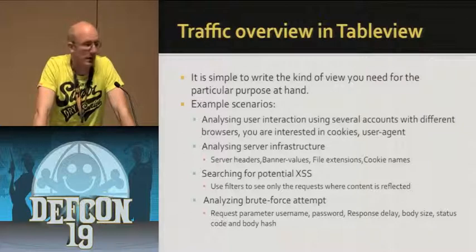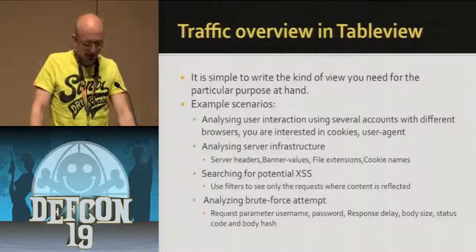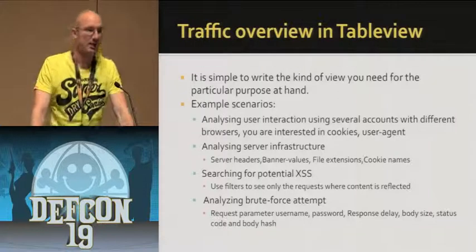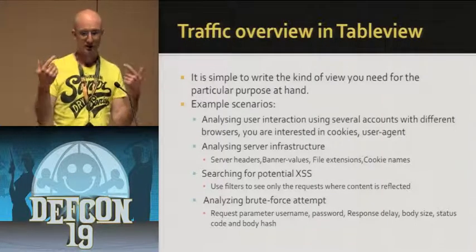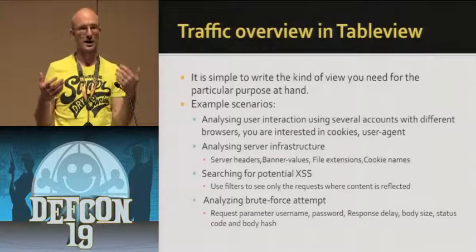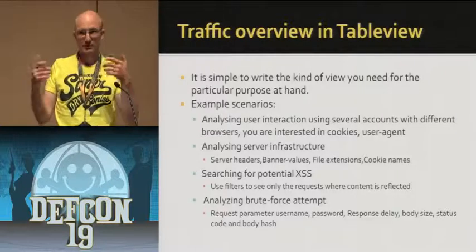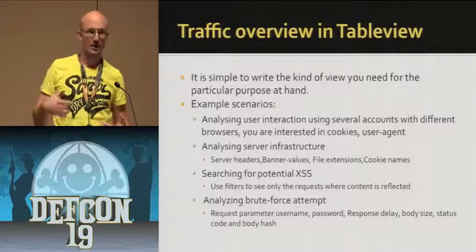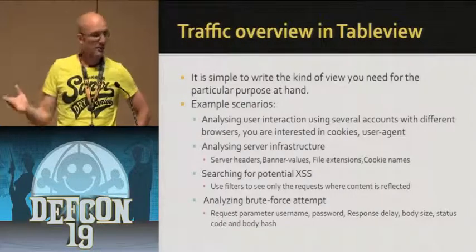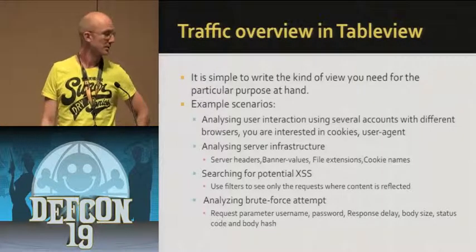Table view gives you a highly customizable way to get an overview of an application flow, and it's very simple to write and reuse the kind of view you need for your particular scenario. Some such scenarios: you might be interested in analyzing user interactions using two different browsers on the same target to see if one user can access the information belonging to the other — there you might want to differentiate based on user agents. In another scenario, you might be more interested in analyzing the server infrastructure — the server banner or headers. In another, you might be analyzing for encoding mistakes and potential cross-site scripting issues.